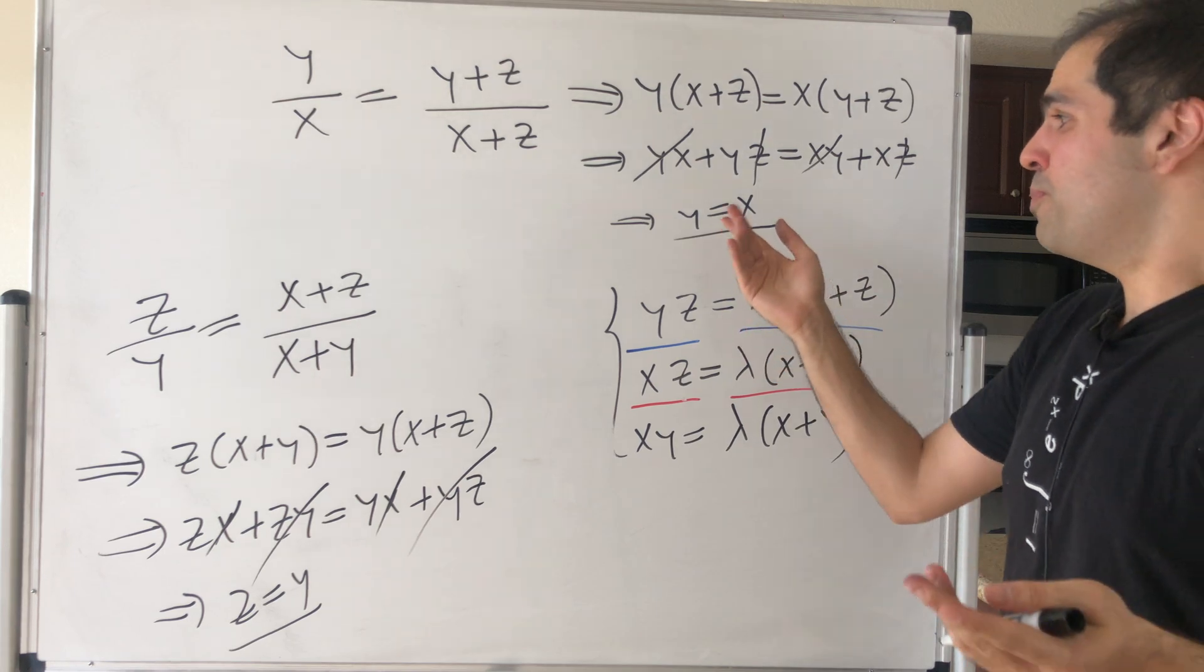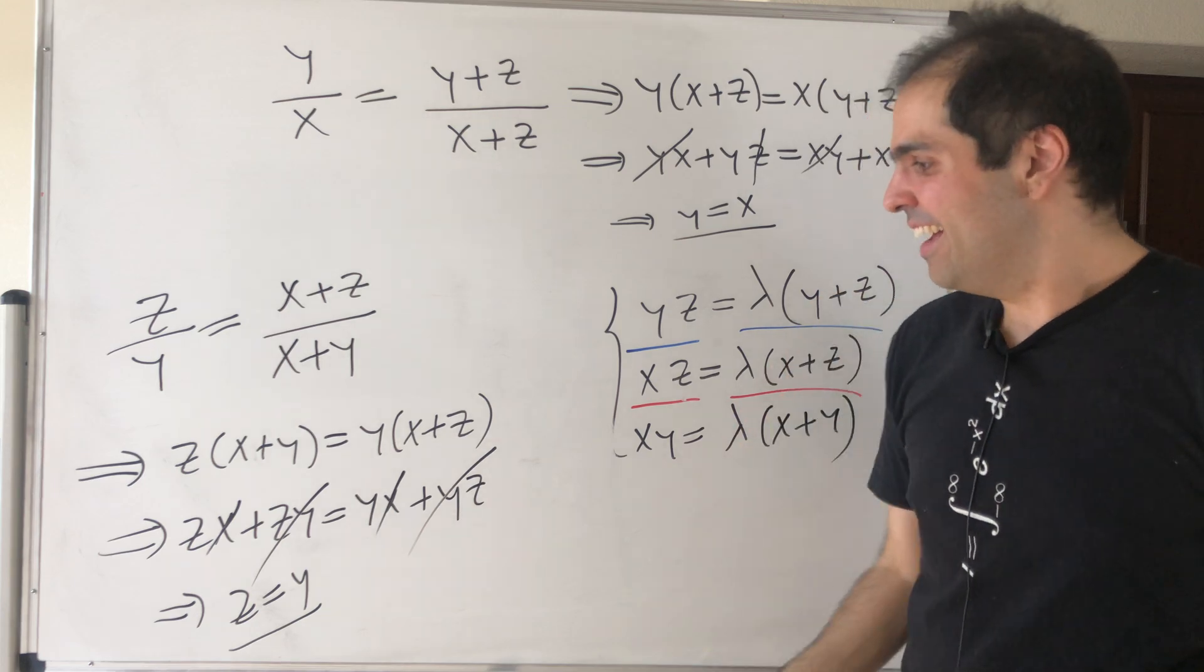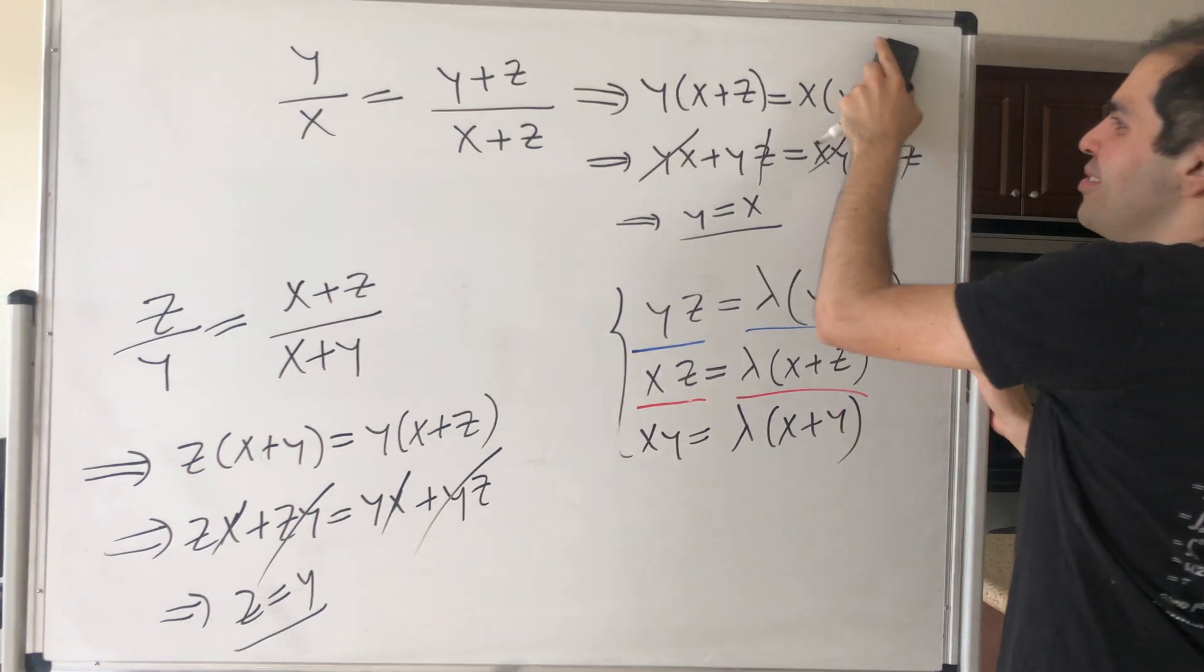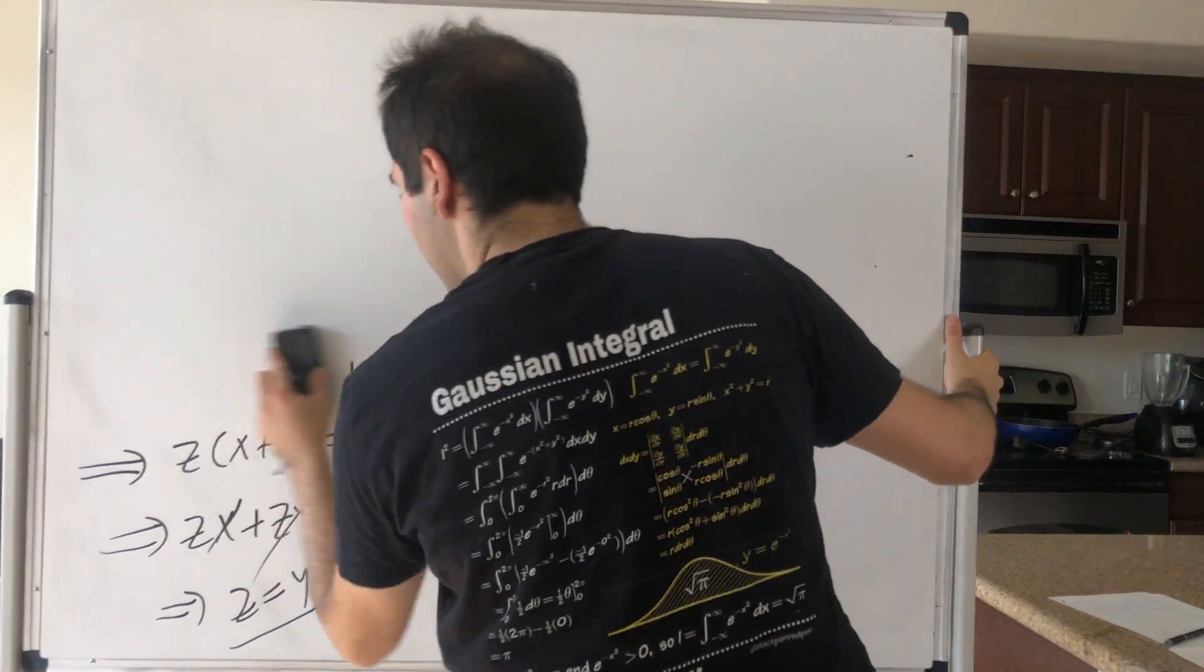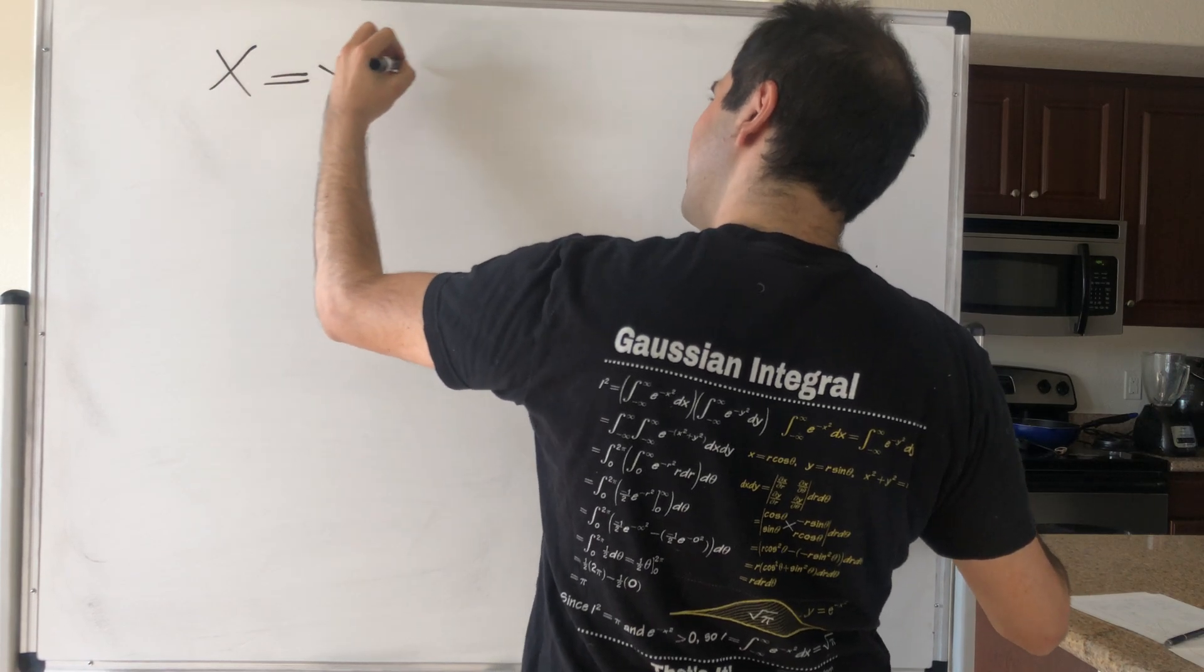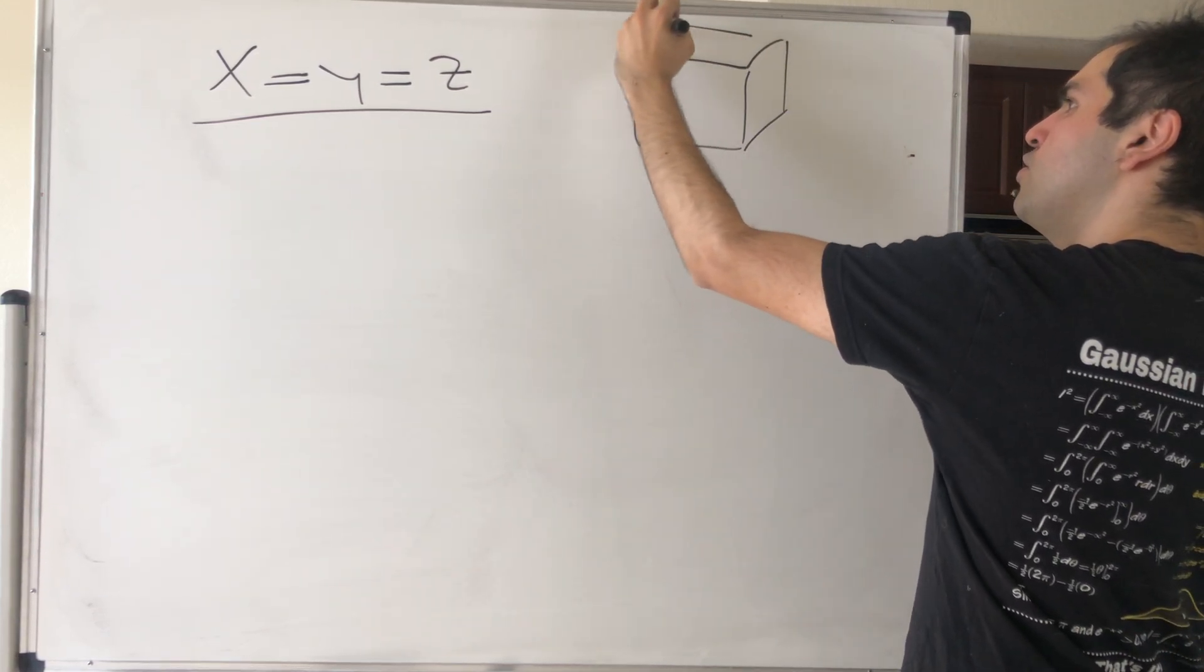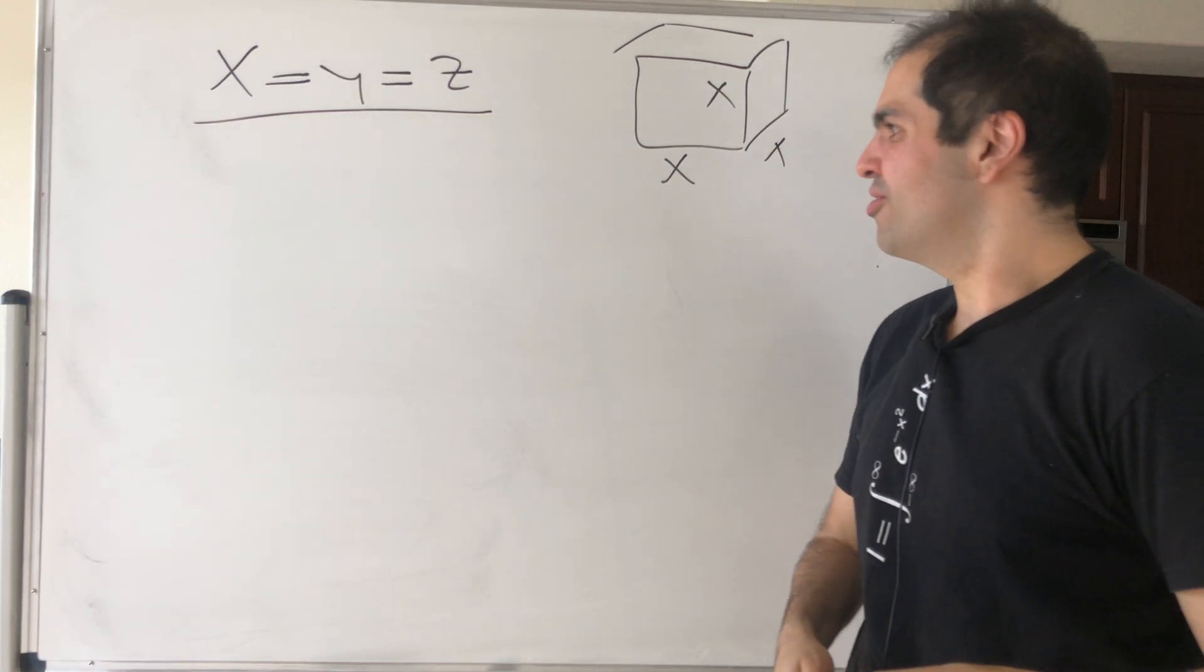So now we have those two pieces of information: y equals x and z equals y, which already tells you something very important, namely that x equals y equals z. So we get x equals y equals z, which already tells you that the optimal box must be a cube of side length x.